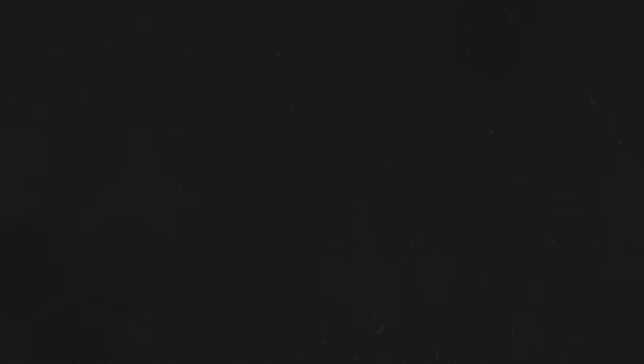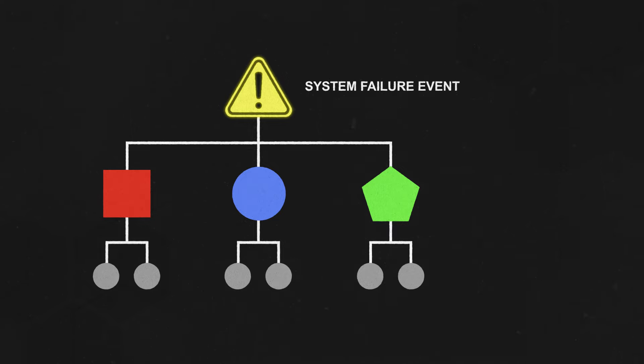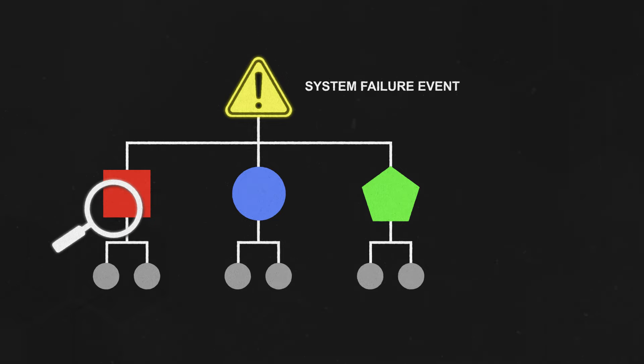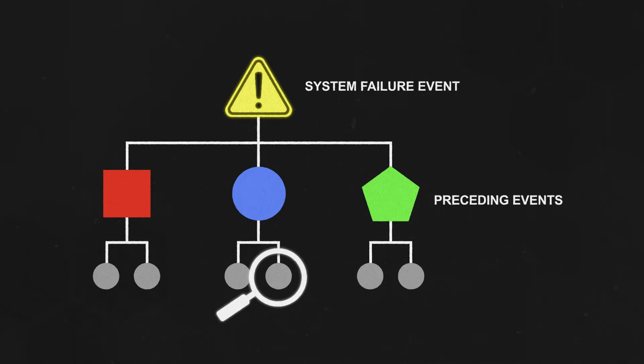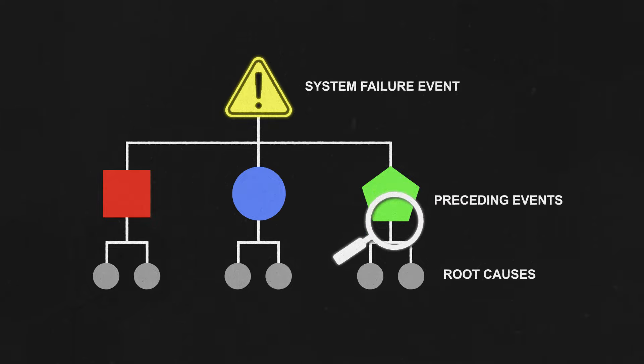The two events may have no impact on each other. Causal AI relies on fault tree analysis, a type of root cause analysis, to model causal relationships — to get to the source of the problem or event. It starts with the system failure event and, in a top-down approach, scrutinizes preceding events to find the root causes.